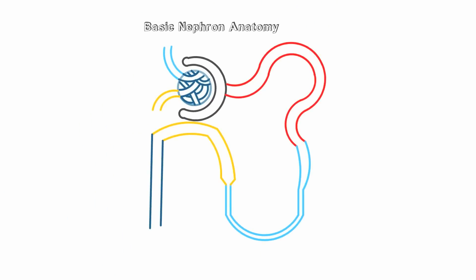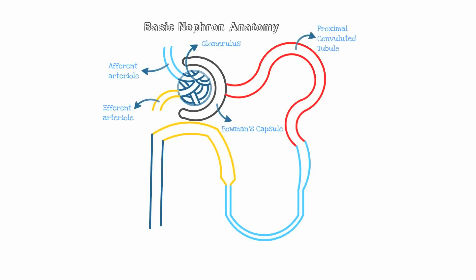Now let's briefly talk about the anatomy of the nephron. The nephron is the basic unit that composes the kidneys, and there are millions of nephrons of different sizes. Blood flows through the afferent arteriole into the glomerulus. Around the glomerulus is the Bowman's capsule, which allows for absorption of ions, water, and waste products into the tubules.